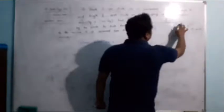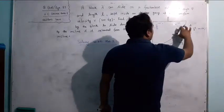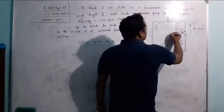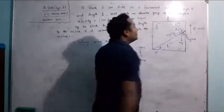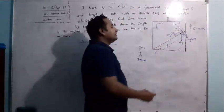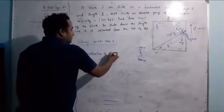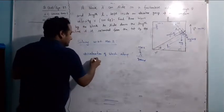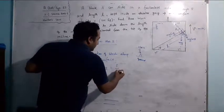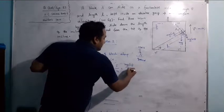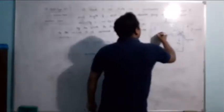The angle theta is at the base. Resolving mg: the component along the incline is mg sin theta, and the component perpendicular to the incline is mg cos theta. We want acceleration along the surface. Acceleration of block along the surface equals force along the surface divided by mass. Force along the surface is mg sin theta, divided by mass m.